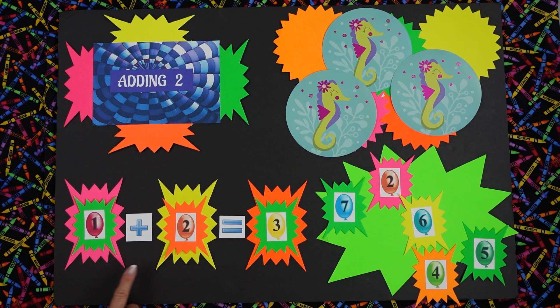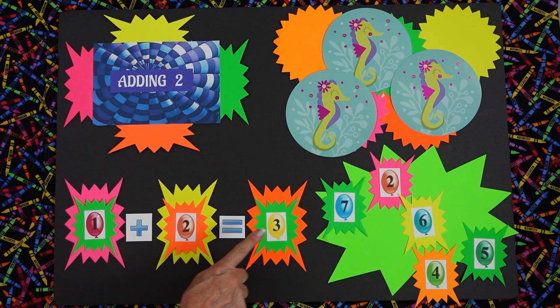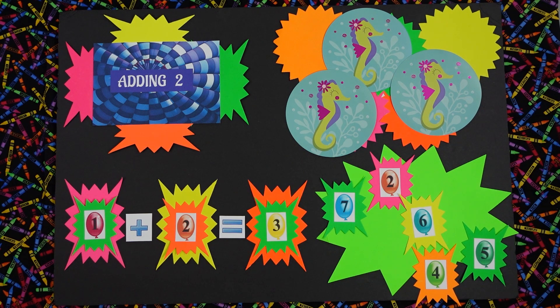Can we read the addition sentence together? Ready? One plus two equals three. Good job. And what are those Lily? Seahorses. You're right. Very good.